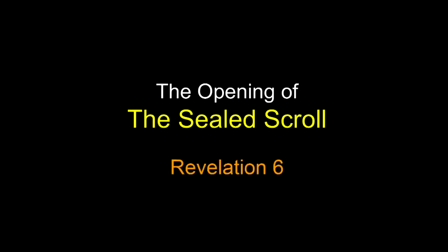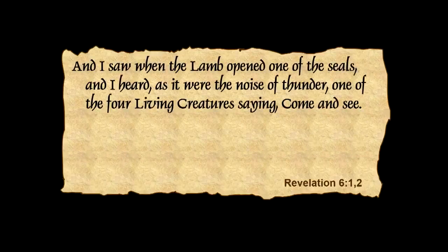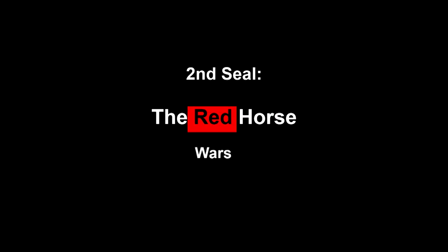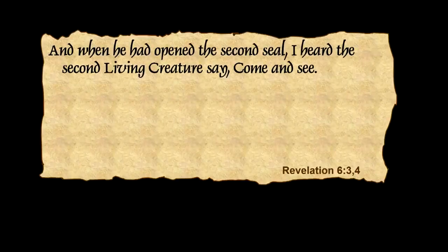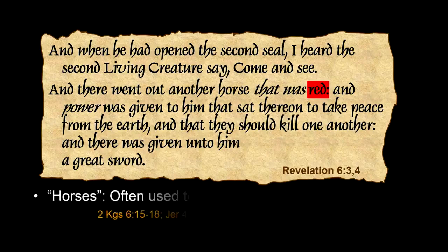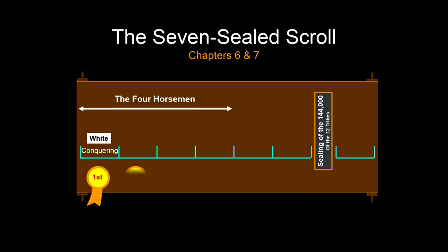When the lamb opened one of the seals, I heard as it were the noise of thunder, and one of the four living creatures saying, Come and see. I saw a white horse — he that sat on him had a bow, and a crown was given unto him, and he went forth conquering. That's the first horseman — I regard it as the most important mistaken identity in the Bible. Then we see a red horse which speaks of wars, and power was given to him to take peace from the earth.